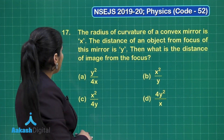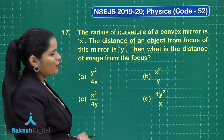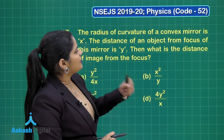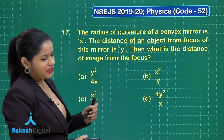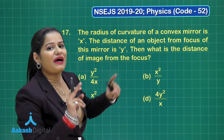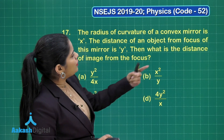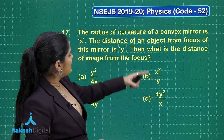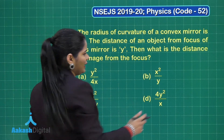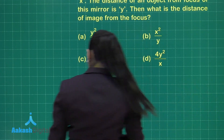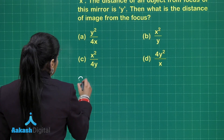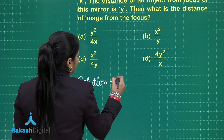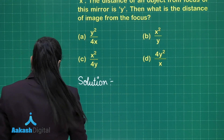Now here I have question number 17, which is an interesting question from the chapter on light. This says the radius of curvature of a convex mirror is x, so the focal length is going to be x by 2. The distance of an object from the focus of the mirror is y. Then what is the distance of the image from the focus? Let us solve this — it is a pretty simple question, but there is some confusion in the language.